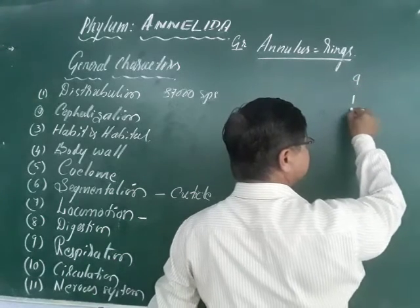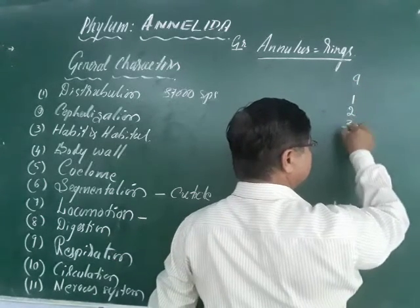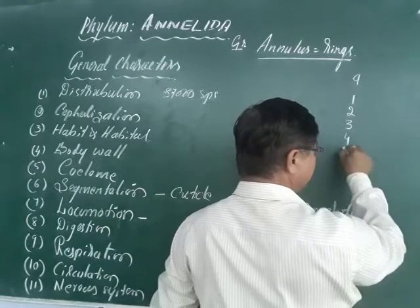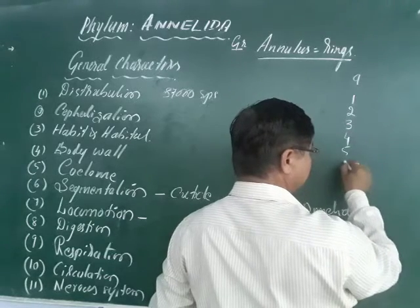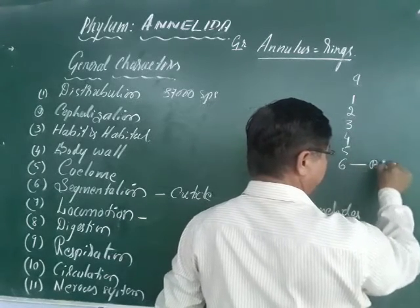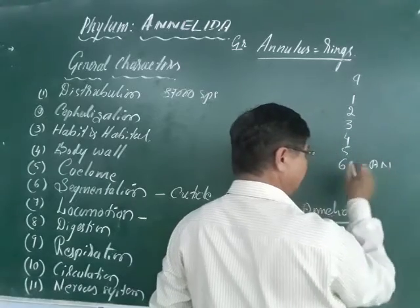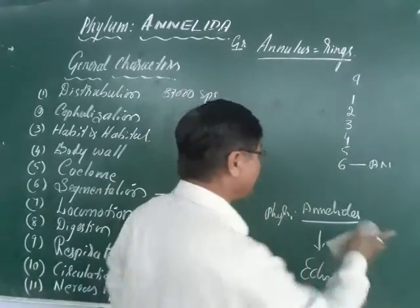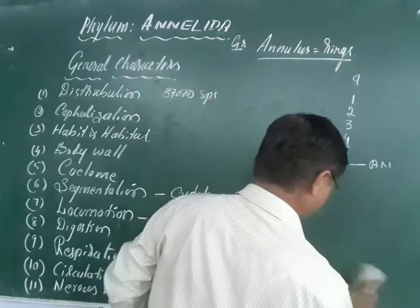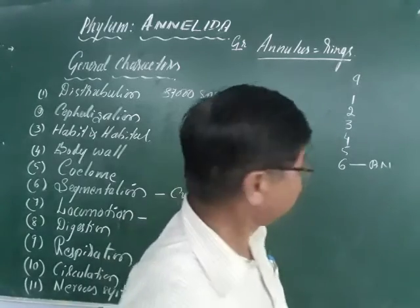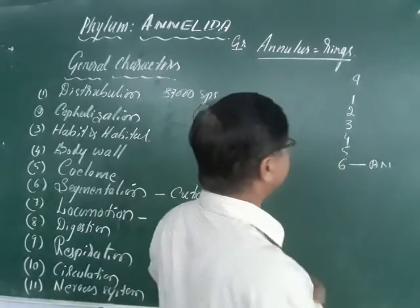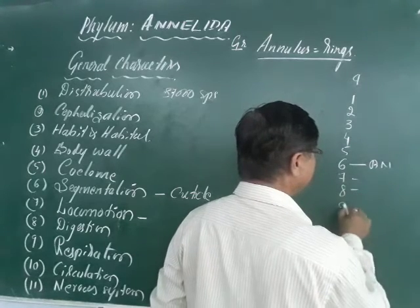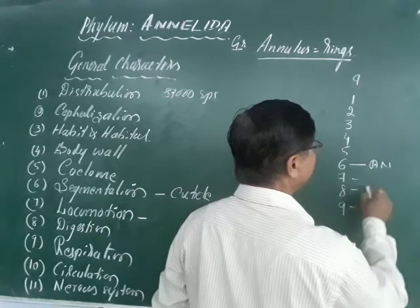One is Protozoa, second Porifera, third Coelentrata, fourth Platyhelminthes, fifth Aschelminthes, sixth Annelida, seventh Arthropoda, eighth Mollusca, and ninth Echinodermata.